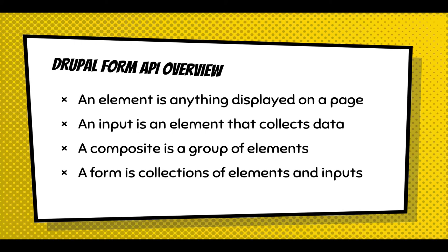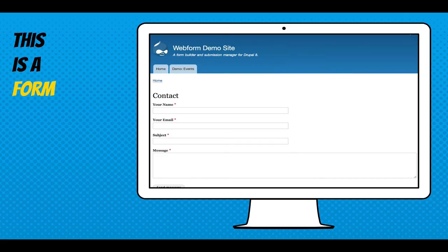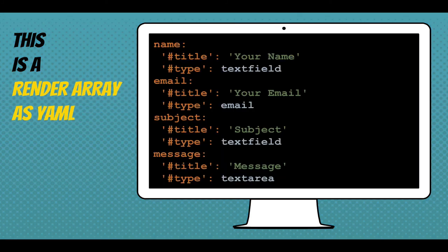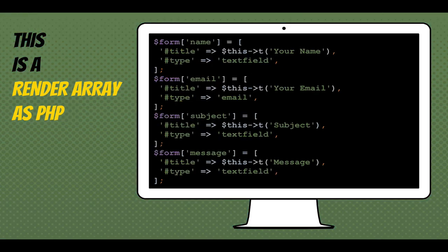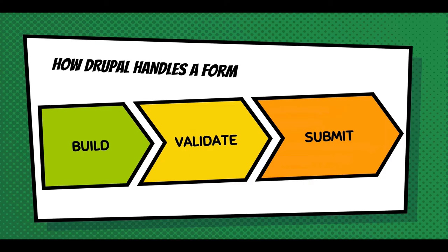This is a form — the output of a Form API form. This is a render array as YAML, which is what we can edit in the webform module. It shows the same contact form we've been talking about, with a text field type. In core, people use PHP for render arrays — it's the same form, just marked up as PHP. For forms, it's pretty simple: forms have three concepts — build, validate, and submit. You need to understand how forms work, and that follows through to elements. Build renders it, but validate and submit are callbacks.